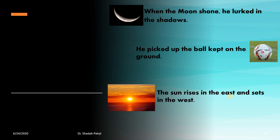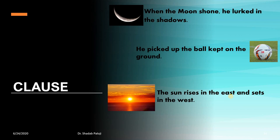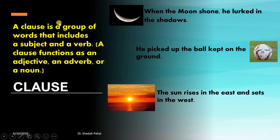Now let us look at something beyond the phrase. 'When the moon shone, he lurked in the shadows.' 'He picked up the ball kept on the ground.' 'The sun rises in the east and sets in the west.' We can call these statements clauses. A clause is another term for a sentence, and a sentence has subject and predicate. Therefore a clause will have subject and predicate. A clause is a group of words that includes a subject and predicate, and it can function as an adjective, adverb, or noun.